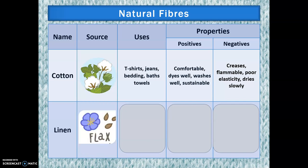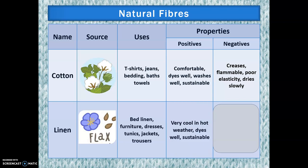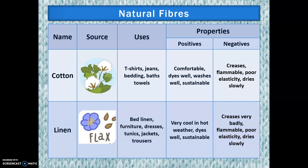Linen comes from the flax plant — you may have had flax seed before, also known as linseed, perhaps on your cereal. It's used in bed linen, furniture, dresses, tunics, jackets and trousers. The benefits are that it's really cool in hot weather — in places like Qatar they wear long tunics made from linen. It dyes very well and is sustainable. However, it creases very badly, is somewhat flammable, has poor elasticity, and dries slowly too.